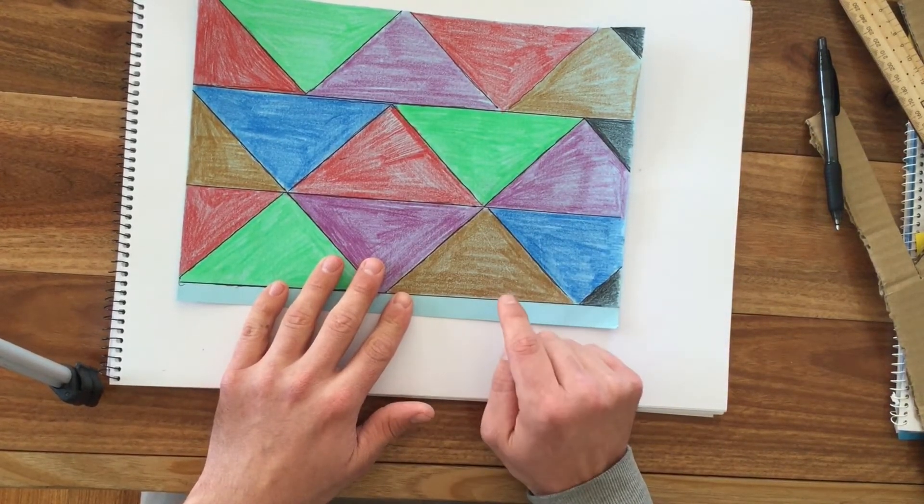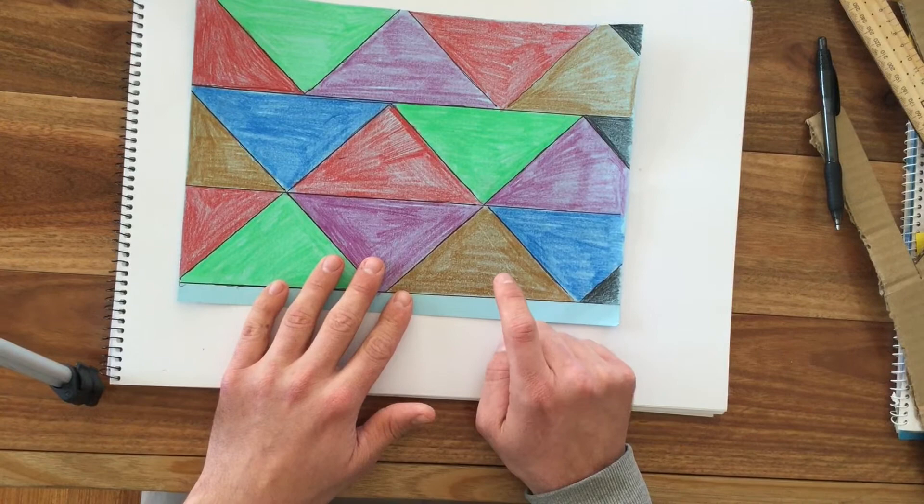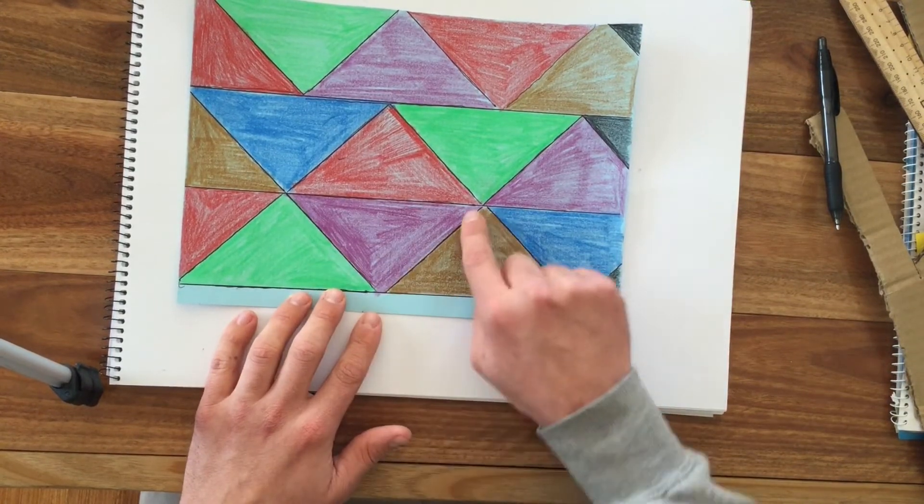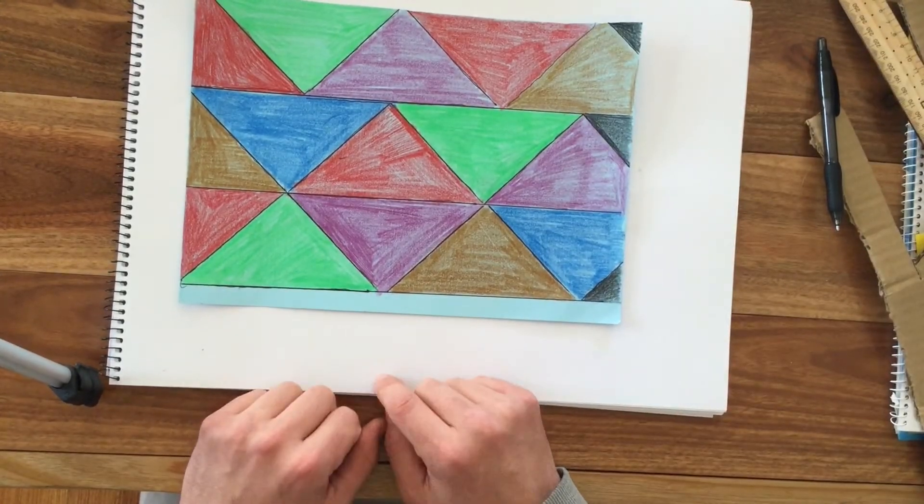This is what I'm expecting that your tessellations look like. Make sure they're colored, make sure they're outlined neat and tidy.